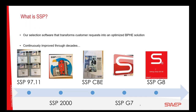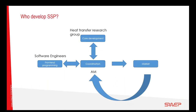We started as a company developing SSP as a solution for our customers and internal colleagues to make accurate and quick selections — to choose the right heat exchanger for the right application. It started off as a very simple DOS-based program, was very quick and easy to use, and obviously developed with the times. We've evolved over the years to where we are now with SSP G8, developed entirely in-house at SWEP. We use our heat transfer research group to carry out the core development, feeding that into the software engineers and coordinating with application management, while also looking at what the market demands.